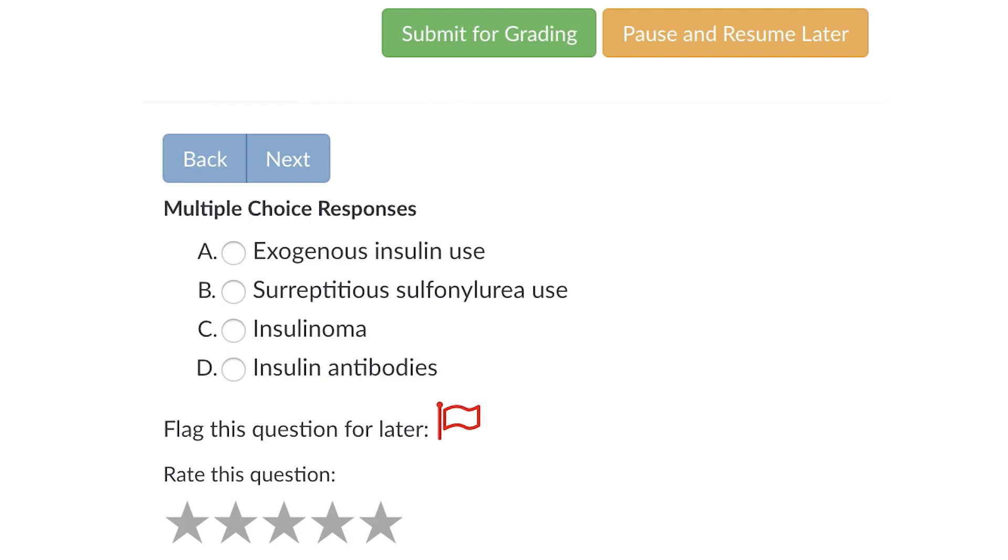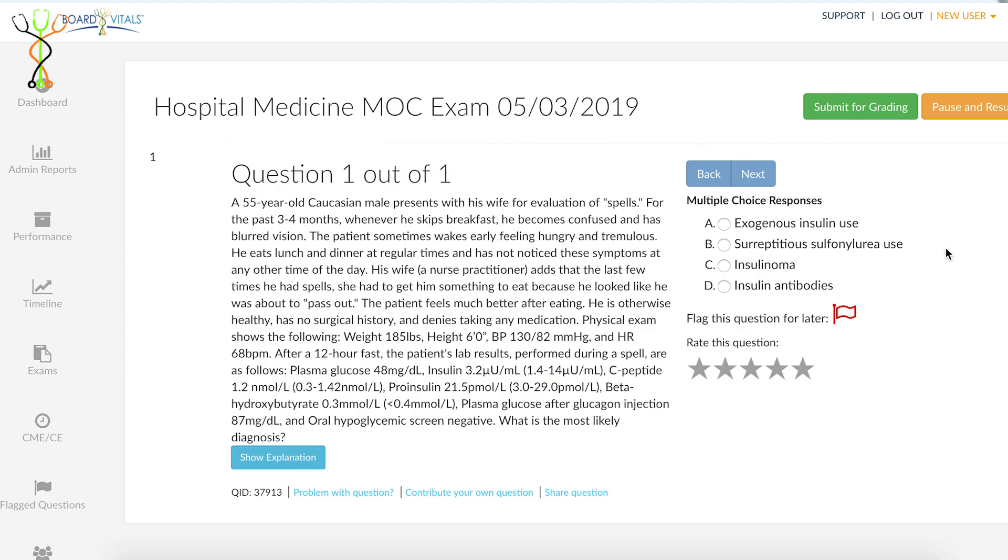C is insulinoma. An insulinoma could and would produce endogenous insulin at states when he should not have insulin active. So this sounds like the correct answer.